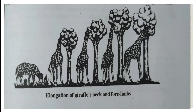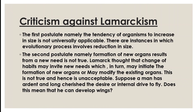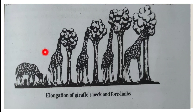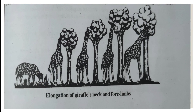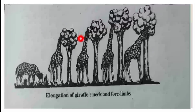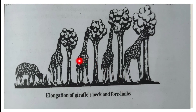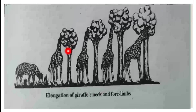According to Lamarckism, the ancestors of giraffes had short necks and short forelimbs. They were inhabitants of grassy plains, habitually grazing on grasses and browsing on bushes. But when the surface vegetation became scanty, they were forced to browse on trees and they stretched upwards with their neck and forelimbs. This illustrates the elongation of the giraffe's neck and forelimbs — according to Lamarck, elongated due to the stretching upwards to browse on trees.